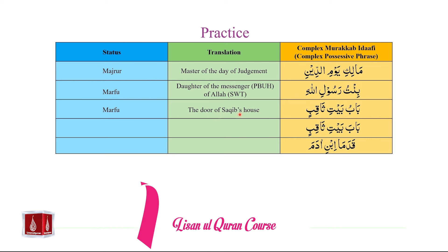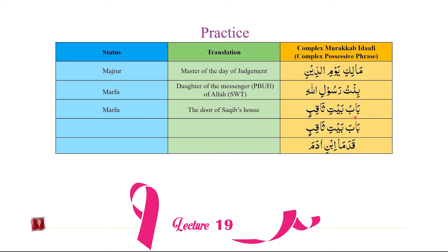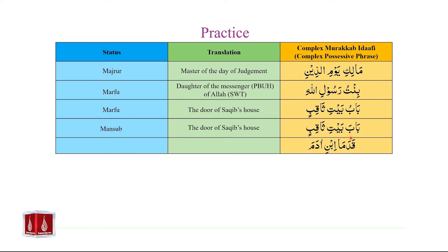Next: باب بيت صاقب — 'the door of Saqib's house.' It is Marfu in status because باب is the Mudhaaf and it is Marfu. بيت will serve as Mudhaaf Ilai for باب and as Mudhaaf for صاقب. باب بيت صاقب translates as 'the door of Saqib's house.' However, in a variant form where باب is Mansub — in the Nasab status — that will make the entire Murakkab Izafi Mansub.